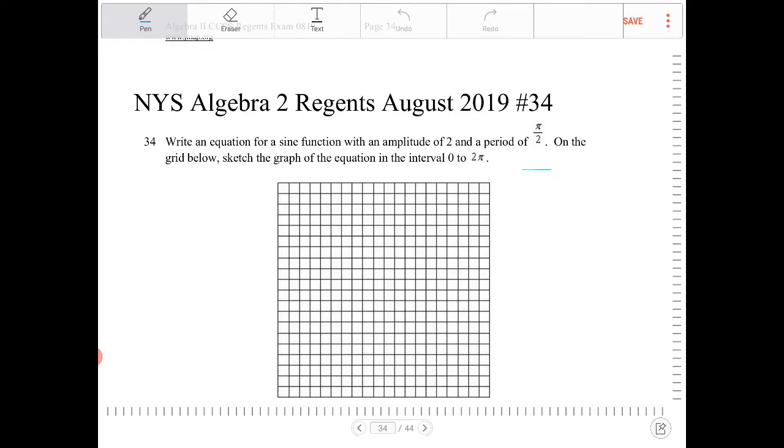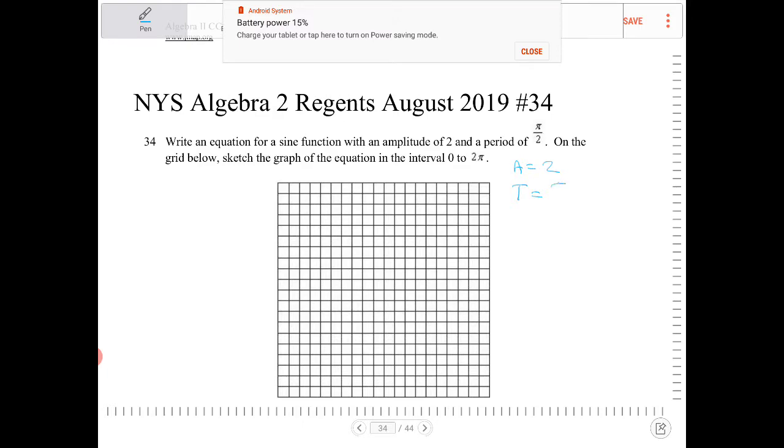Okay, so the amplitude is equal to 2. The period is equal to pi over 2.